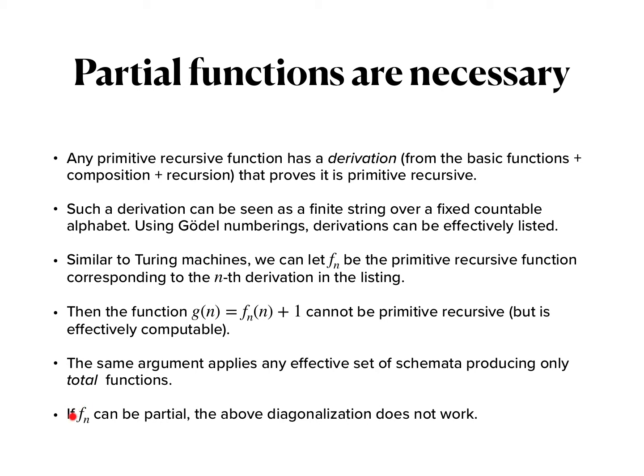However, if f_n can be partial, that means it's not necessarily defined, so f_n(n) can be undefined. Then g(n) would be undefined too. And therefore, we don't have the diagonalization happening at this point. So for partial functions, this argument does not work.